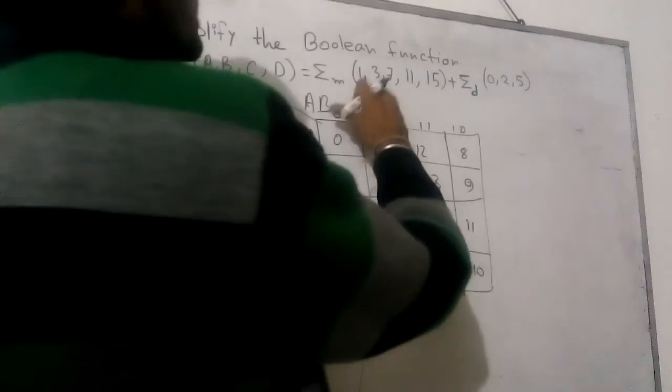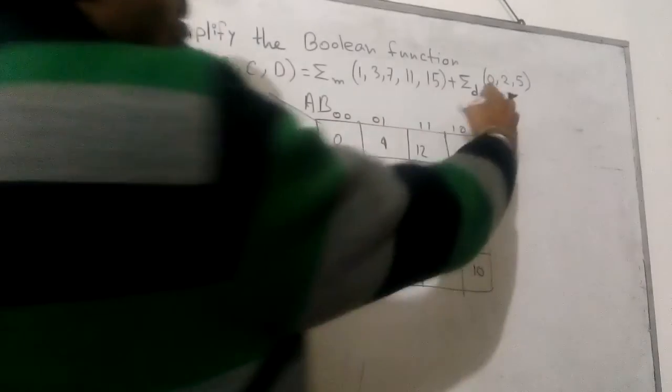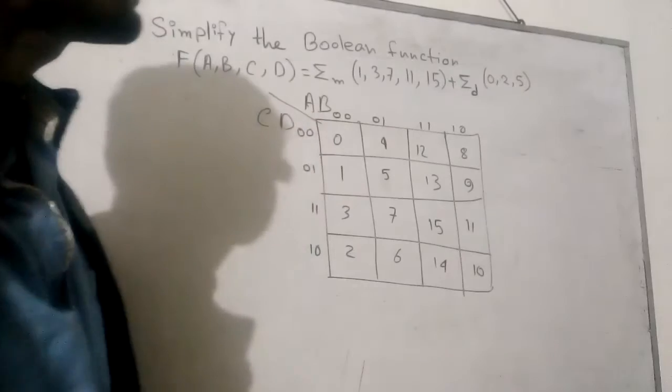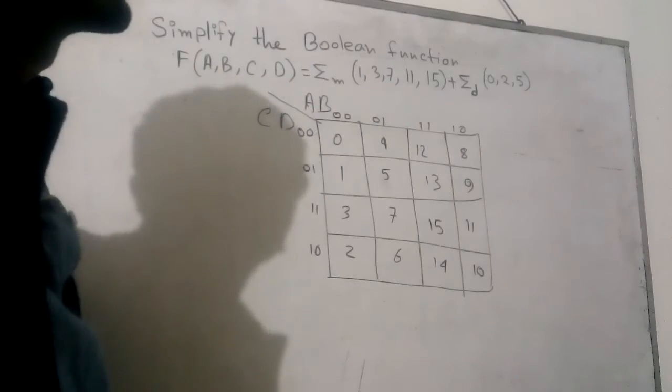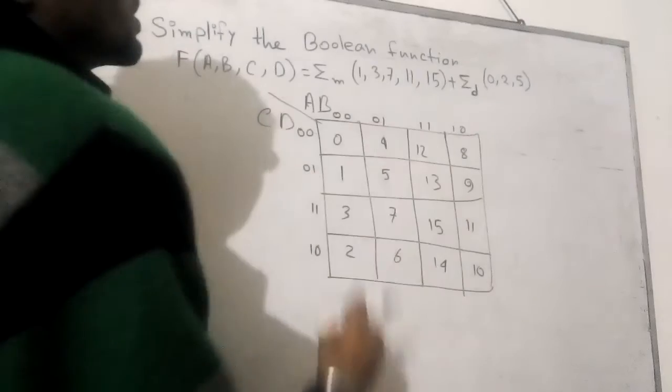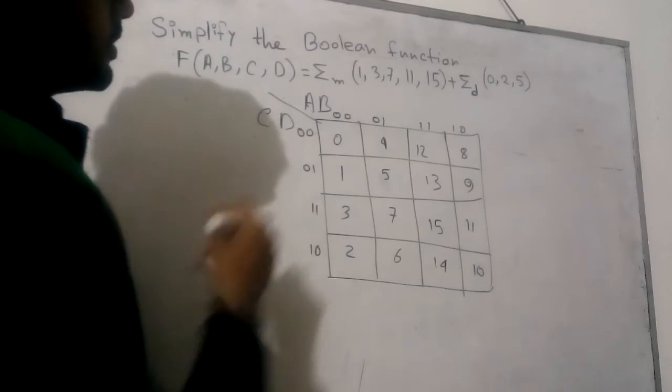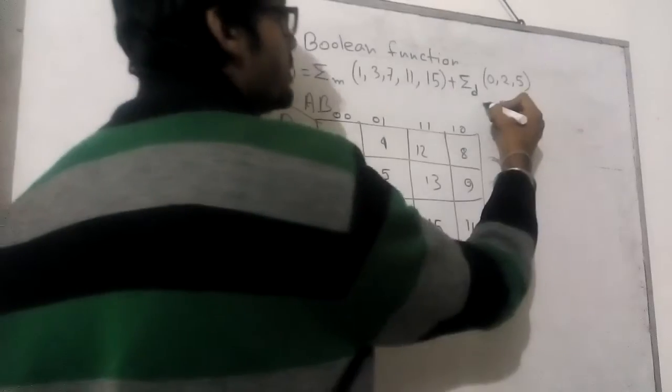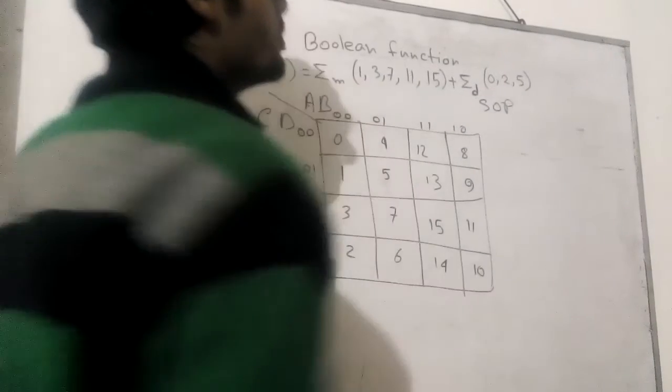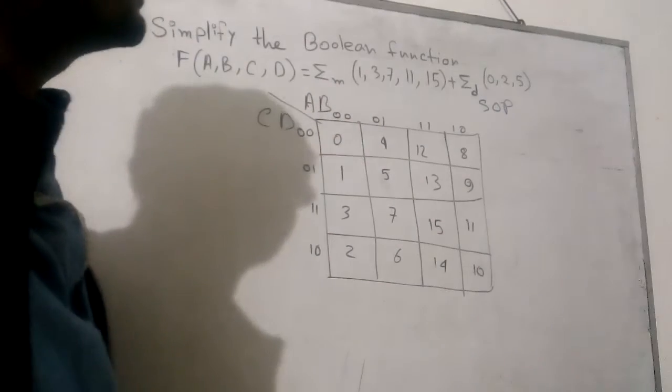As we know the values, we are going to put our values and the don't-care values. Here we can see 1, 3, 7, 11, 15.